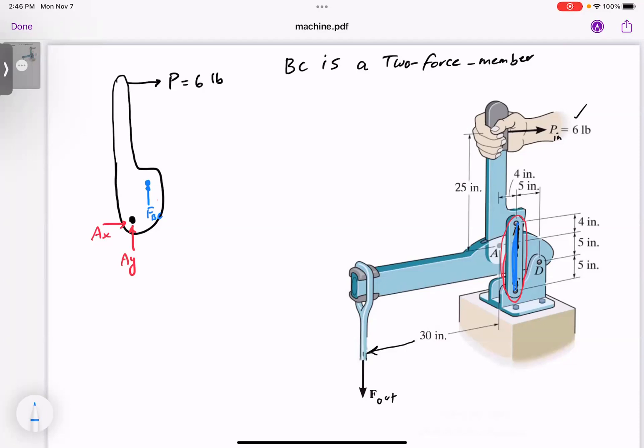Now you have three unknowns so you can go ahead and take moment about A, counterclockwise positive. The moment of FBC about A, FBC times this distance which is four inches, and that's going counterclockwise positive. The moment of the six pound force is going clockwise, six times 25 inches equals zero.